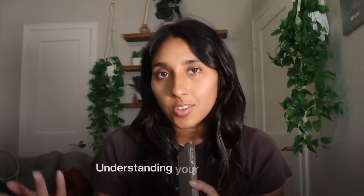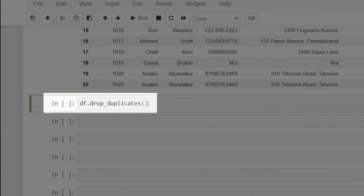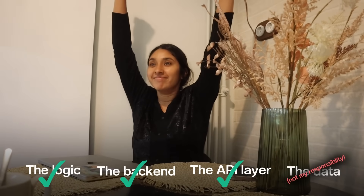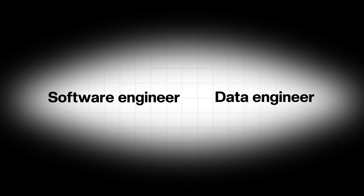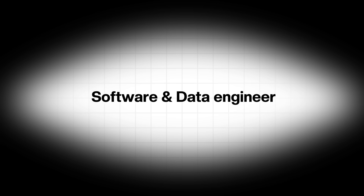A huge part of working with LLMs, and really just building smart systems in general, is understanding your data pipeline — knowing how to collect data, shape it, and clean it into something you can actually use. Some software engineers completely overlook this. They think: I can just write the logic, the backend, the API layer, and the data is someone else's job. But in reality, the line between software engineer and data engineer gets blurrier every day, especially with this new AI landscape.